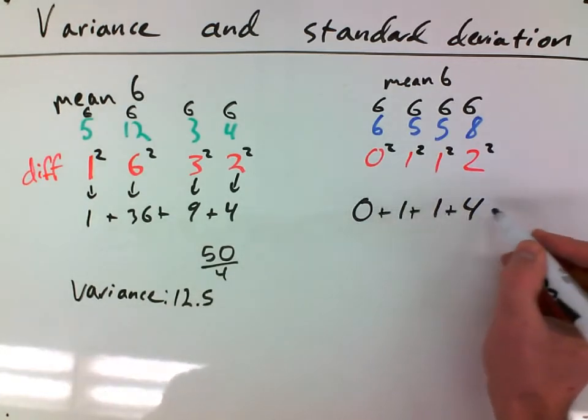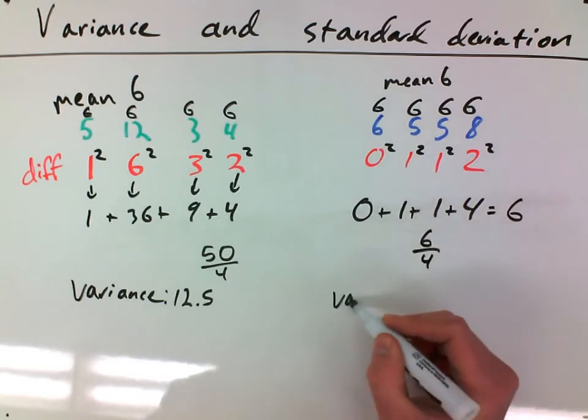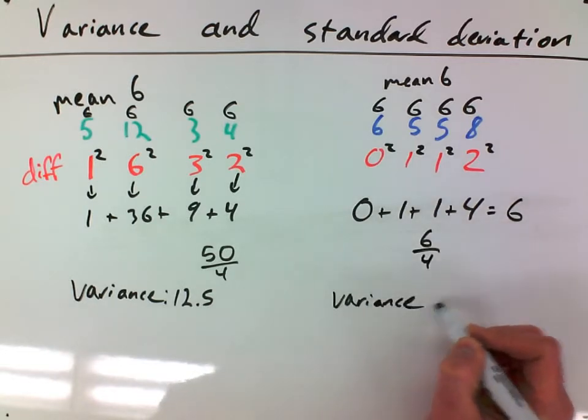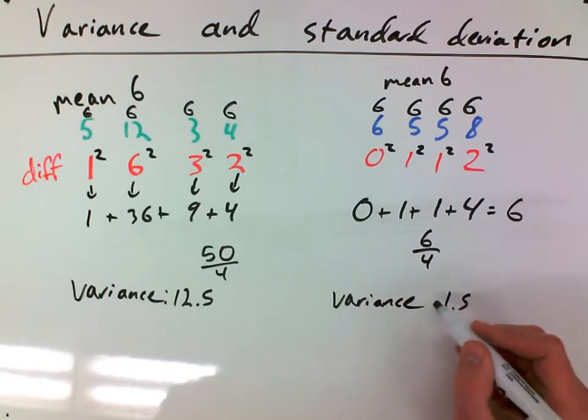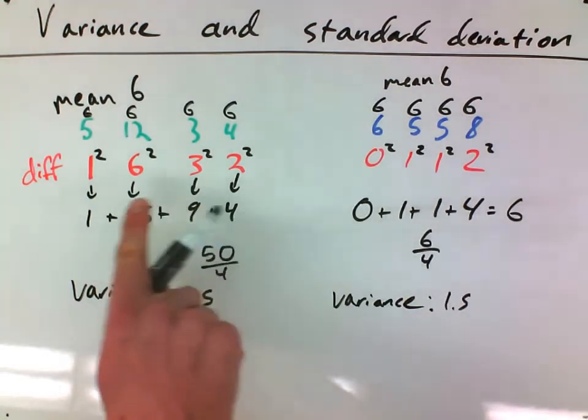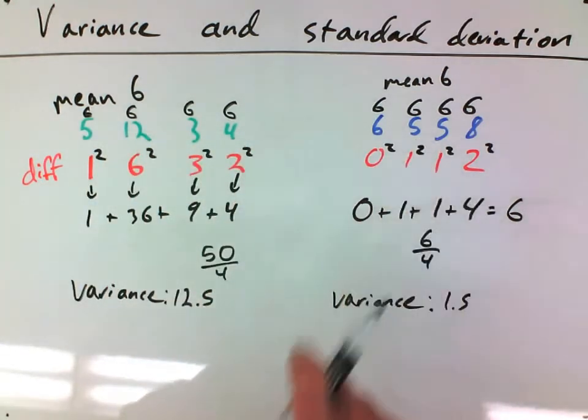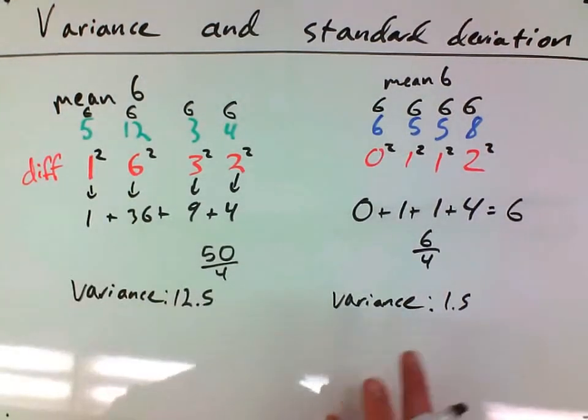Over here when I add these all up, I get 6, and 6 divided by 4 means that I'll have a variance of 1.5. So the higher the variance, the more spread out the data is. This guy was more wild than this guy who was pretty consistent. So the bigger the variance, the more spread out the data. Smaller variance, the more compacted data.